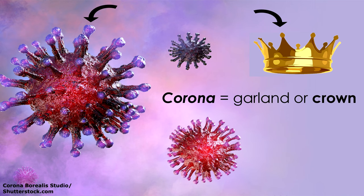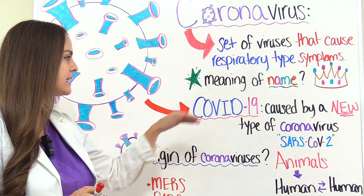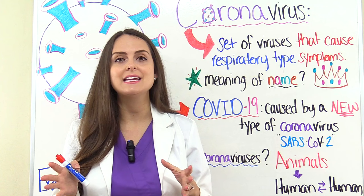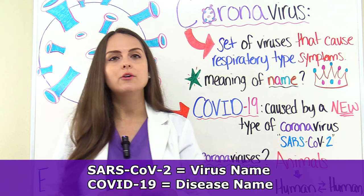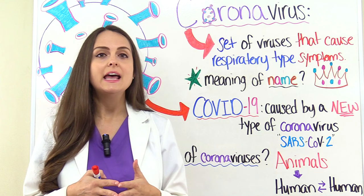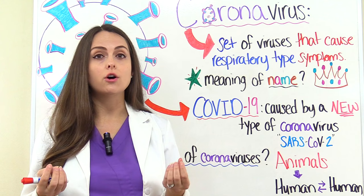The coronavirus we're seeing today is causing COVID-19. This is a new type of coronavirus that hasn't been seen in humans up until now, and they have recently given this virus a name: it is called SARS Coronavirus 2. According to the CDC, this coronavirus causing COVID-19 is genetically similar to the coronavirus that caused SARS; however, they are two different viruses.